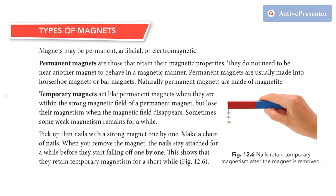Now let's talk about the types of magnets. There are mainly two types of magnets: one is called permanent magnet and the second is called temporary magnet. The third type is the electromagnetic magnet, which is a type of temporary magnet.